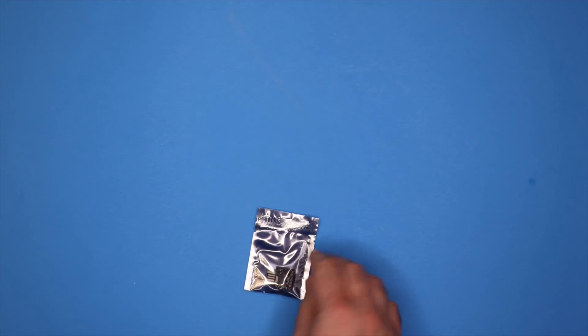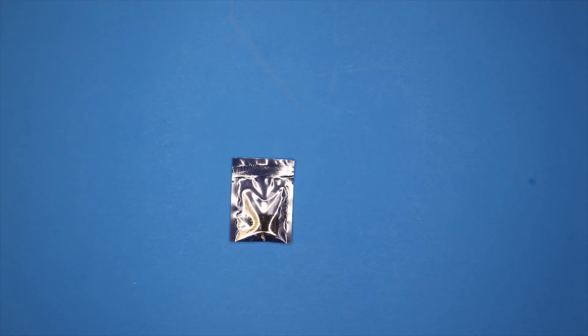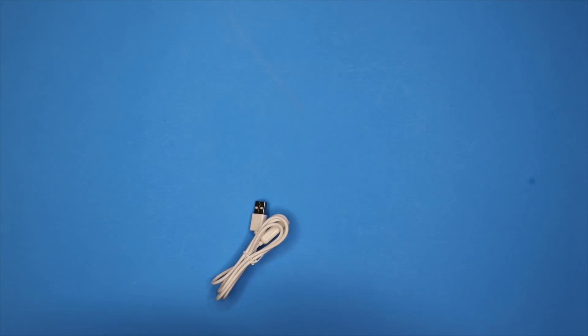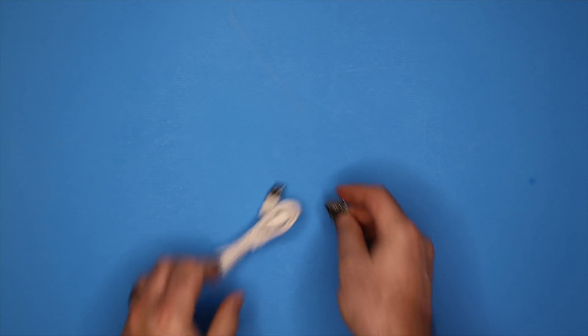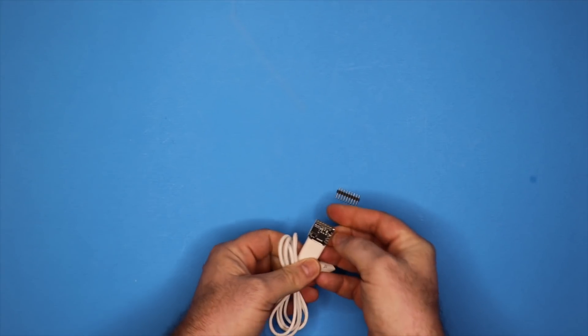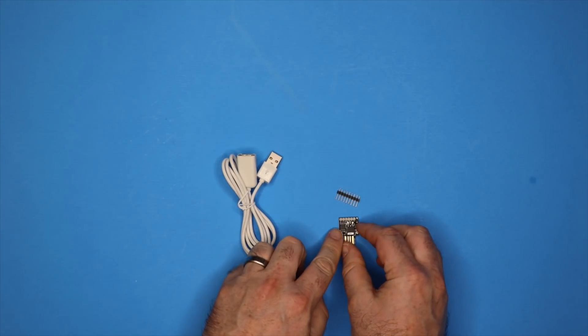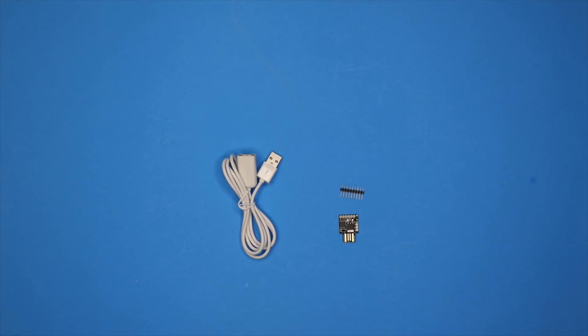Next in the box here we have the Digispark ATtiny85 board. So this is the little board that can plug right into USB or you can also use the USB extender. You can plug the USB extender into a computer and then plug the Digispark into the USB extender. There are some pins there you can solder on. You can see that the actual PCB of the Digispark fits right in.